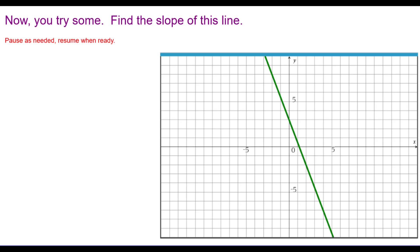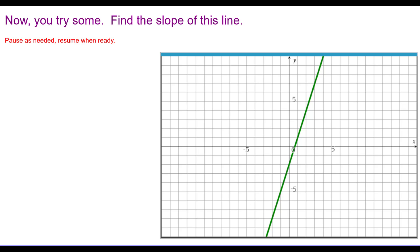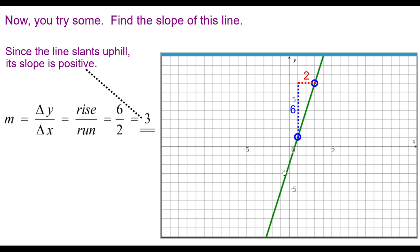Now you try some. Find the slope of this line. The slope slants downhill, so its slope is negative — negative five over two, negative five-halves. Find the slope of the next line. This line slants uphill, so it's positive. Rise of 6, run of 2 — 6 divided by 2 equals 3, so three over one, or just positive three.